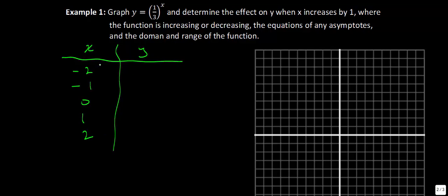If we take x equals negative 2, we have one-third raised to the power of negative 2. When you raise something to a negative power you take the reciprocal, so this is the same as 3 to the power of 2, which gives you 9. For x equals negative 1: one-third to the negative 1 just flips it to give 3. For x equals 0: anything to the power of 0 is 1. For x equals 1: one-third to the power of 1 is itself, one-third. For x equals 2: one-third squared gives one-ninth.